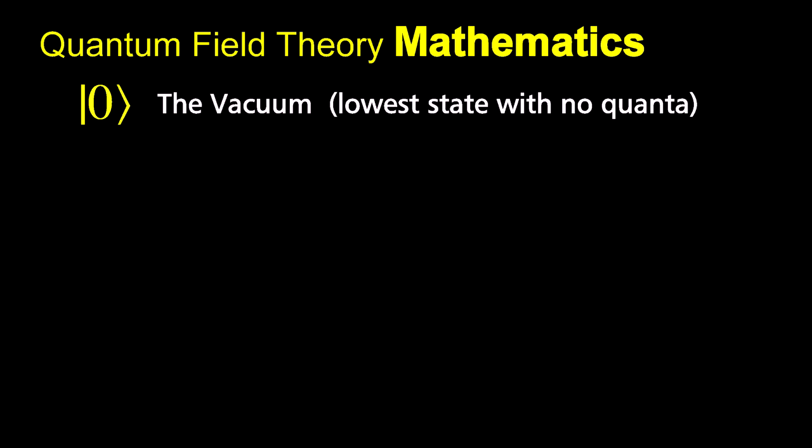Now, our measuring instrument can only show integers. How are we going to enforce that requirement? We invent a mathematical operator that creates one quanta at a time. We'll call it the creation operator.